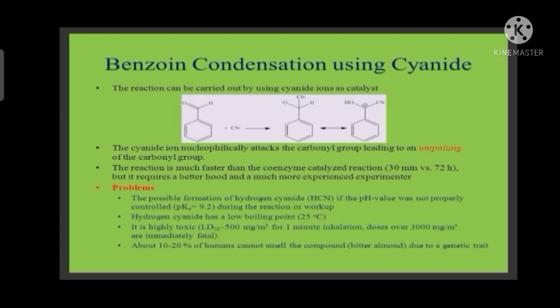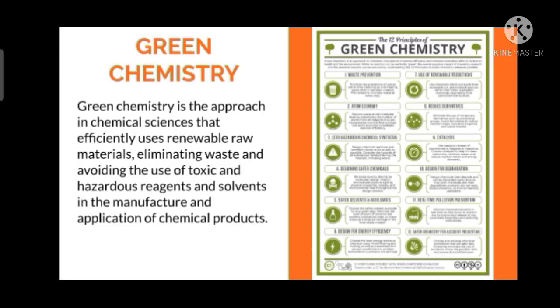Now let us see what we can use instead of cyanide. Before knowing about the greener method, let us know what is green chemistry, because it is only because of green chemistry that we are able to develop the greener method of benzoin condensation. Green chemistry is the approach in chemical science that efficiently uses renewable raw materials, eliminating waste and avoiding the use of toxic and hazardous reagents and solvents in the manufacture.